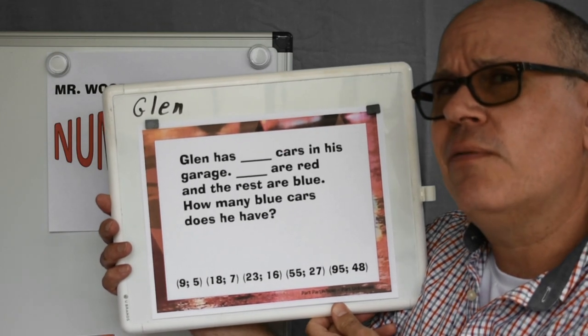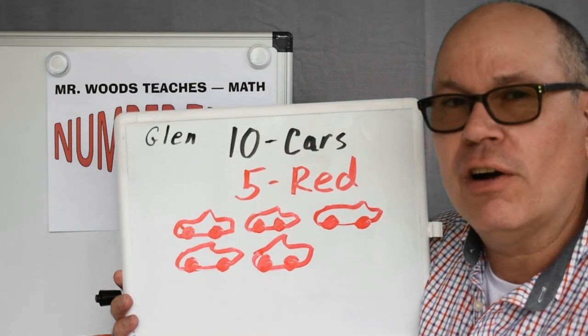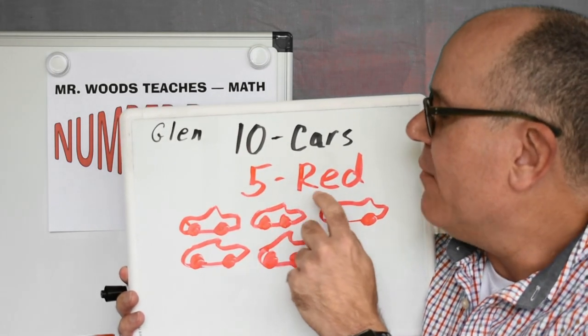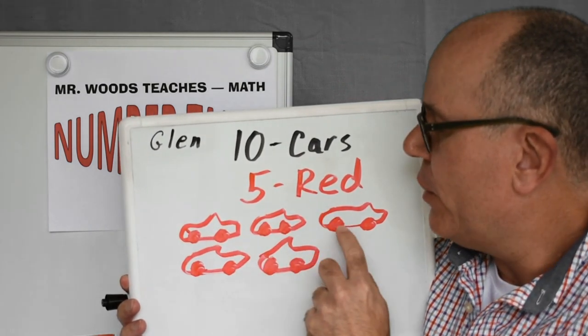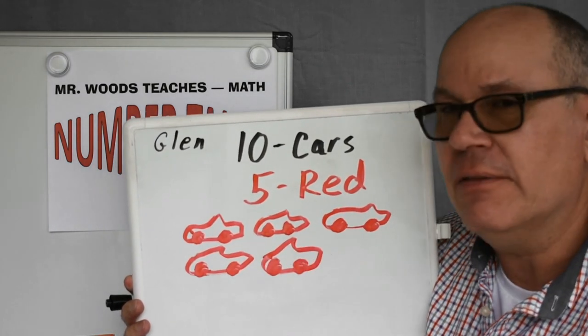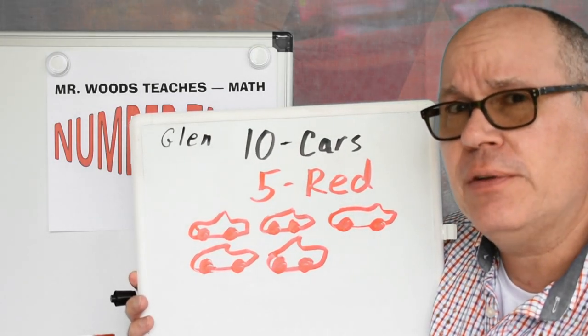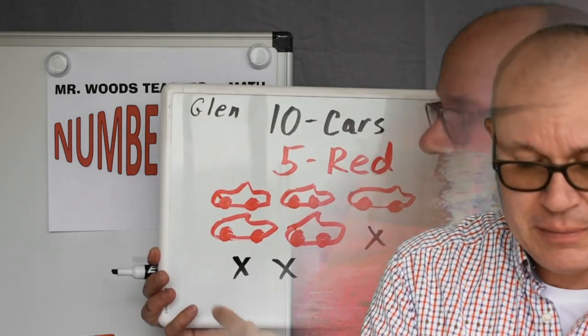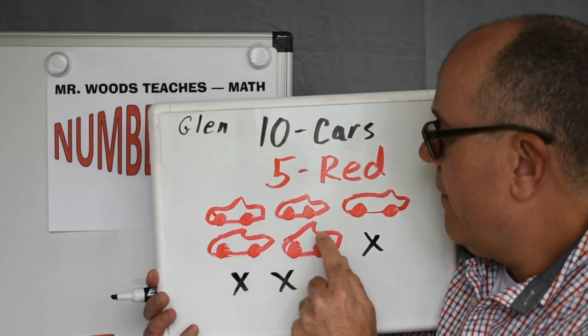Let's see what we can do for that. So remember, Glenn has 10 cars total in his garage. 5 are red. 1, 2, 3, 4, 5. How do we count on? Do you remember how to do that? I'll show you. 1, 2, 3, 4, 5.